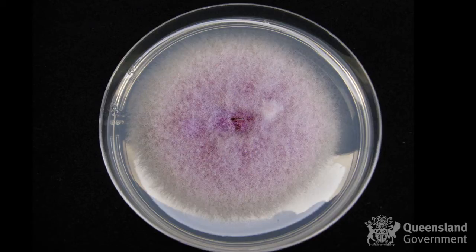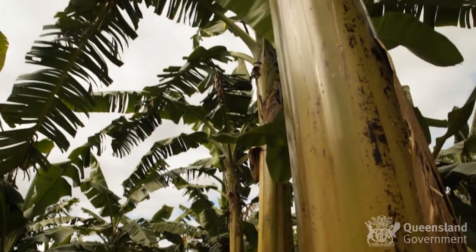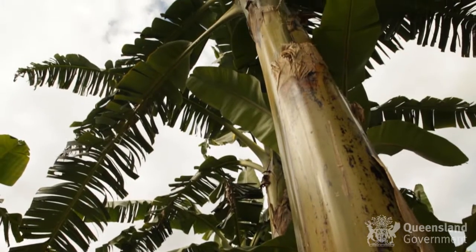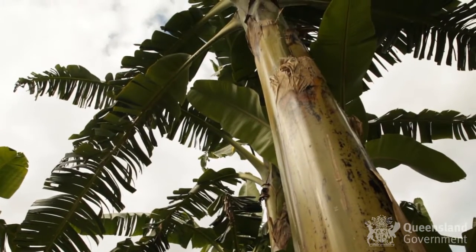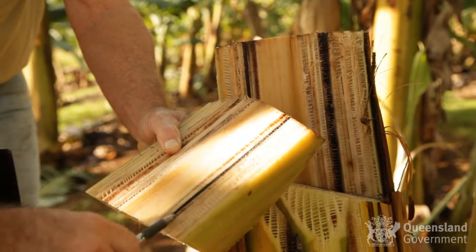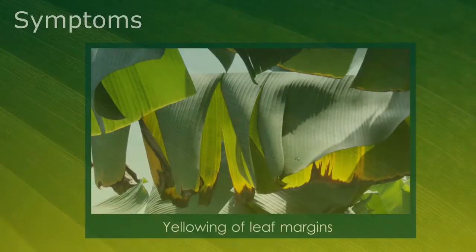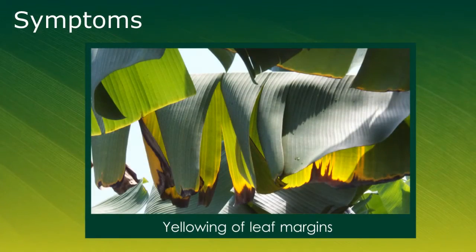Tropical Race 4 is caused by a soil-borne fungus which initially infects the plant through the roots, then moves through the plant into the vascular system within the pseudostem. It eventually blocks the vascular tissue, which causes plant death.